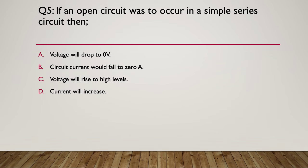Question five. If an open circuit was to occur in a simple series circuit, then what would happen? A. The voltage will drop to zero volts. B. The circuit current would fall to zero amps. C. The voltage will rise to high levels. Or D. The current will actually increase. So pause here.